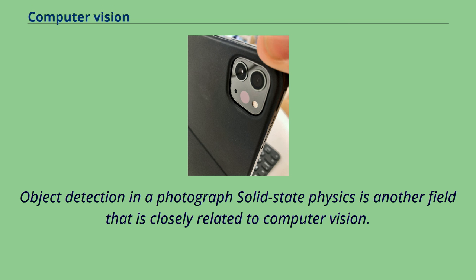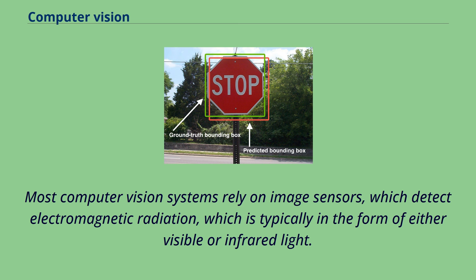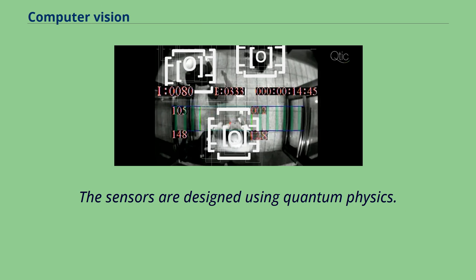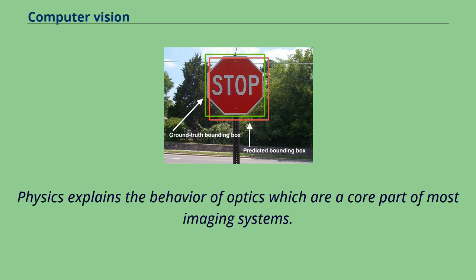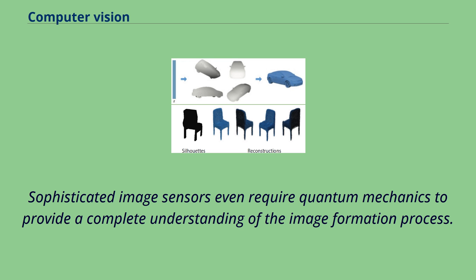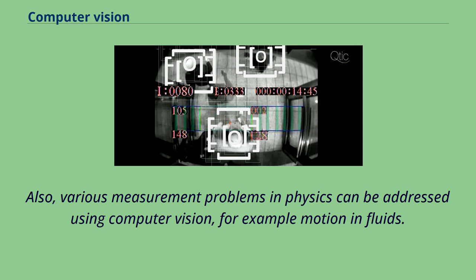Most computer vision systems rely on image sensors, which detect electromagnetic radiation, typically in the form of either visible or infrared light. The sensors are designed using quantum physics. The process by which light interacts with surfaces is explained using physics. Physics explains the behavior of optics which are a core part of most imaging systems. Sophisticated image sensors even require quantum mechanics to provide a complete understanding of the image formation process. Various measurement problems in physics can be addressed using computer vision, for example motion in fluids.